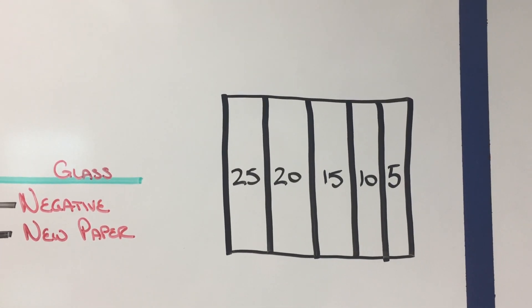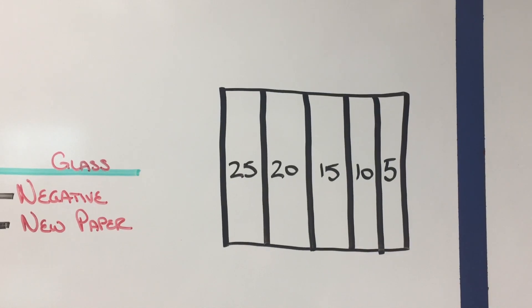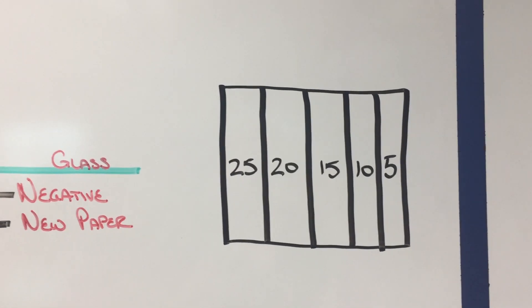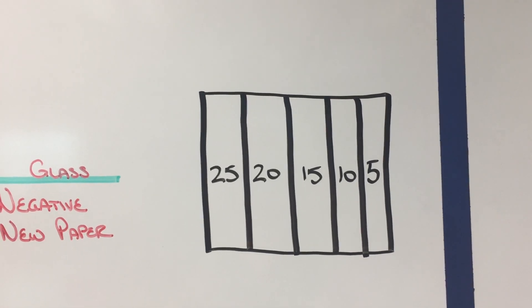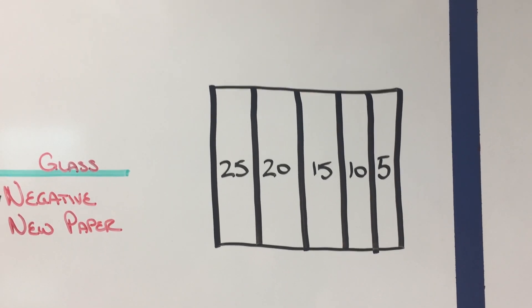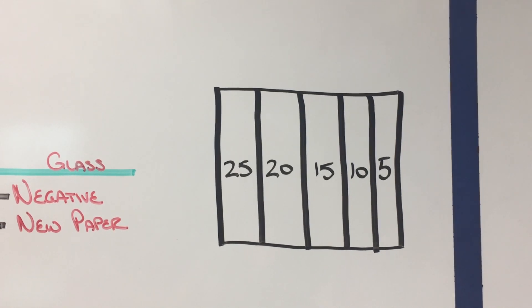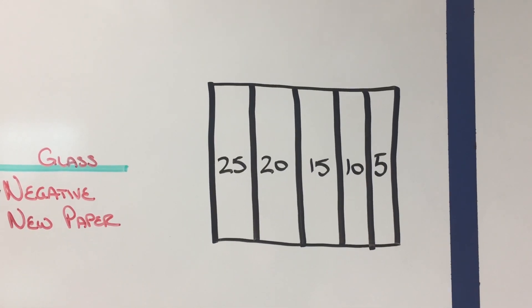So the exposure will be dark at one end and light at the other but that will give us multiple exposure times on one piece of paper so that you're not guessing over and over again trying to find the correct exposure time.